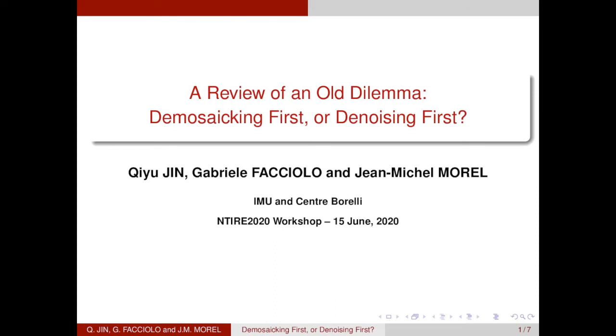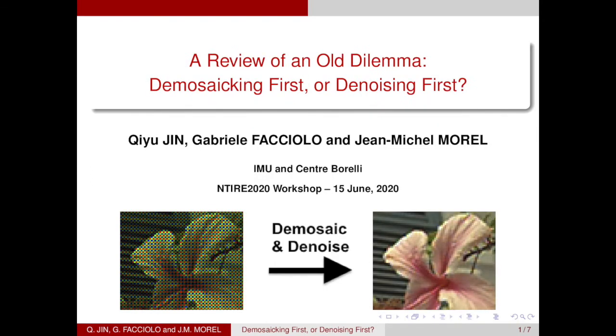A raw image is a noisy mosaic of red, green and blue pixels. To get an RGB image, the color channels must be interpolated and denoised. But which operation should come first?